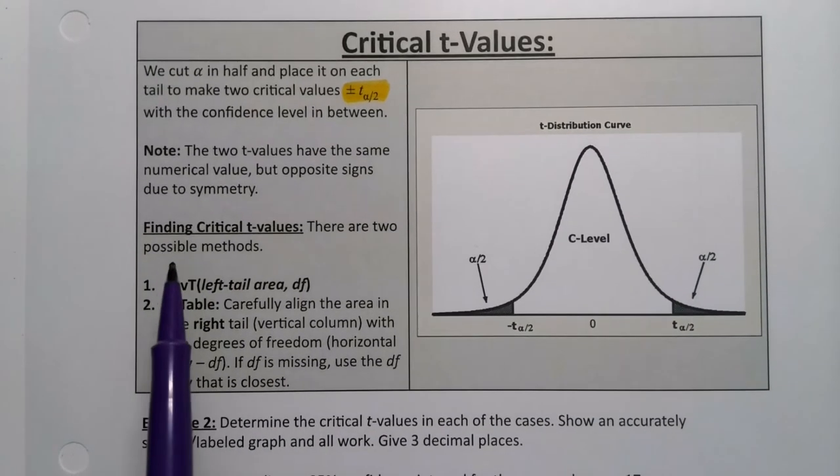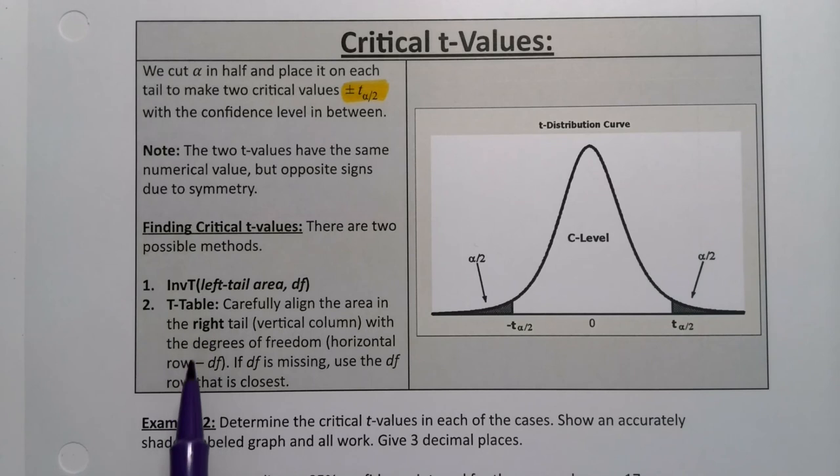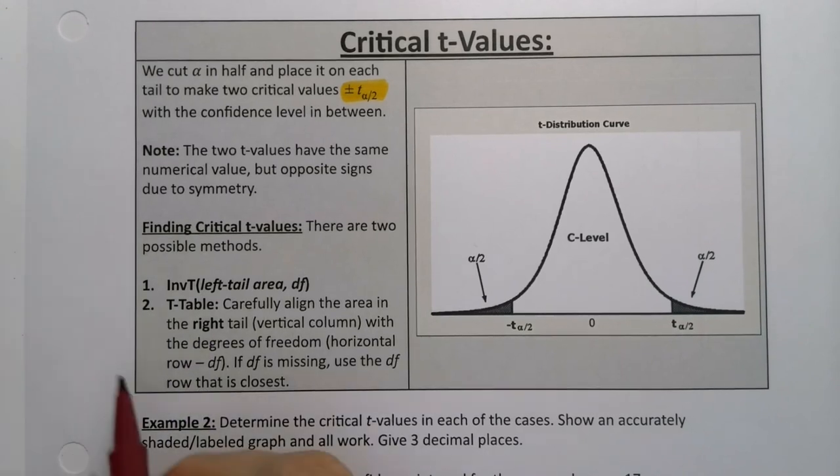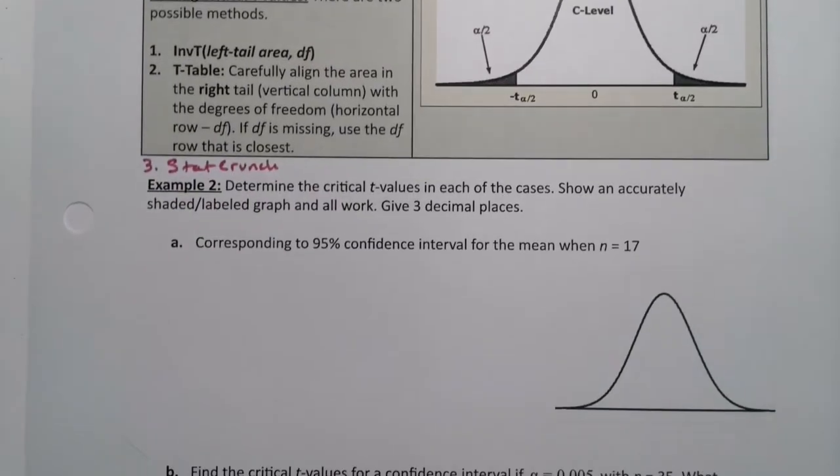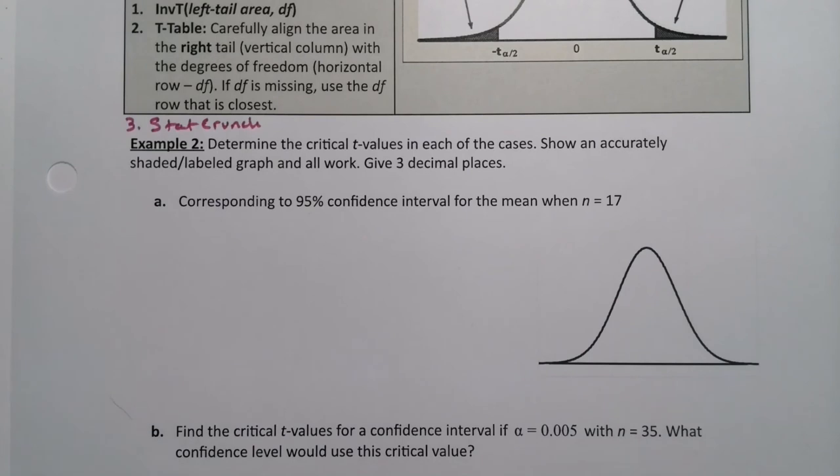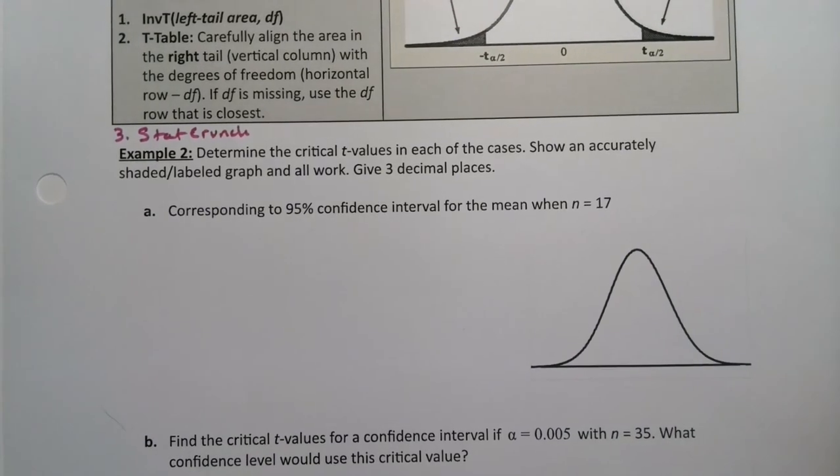And how we're going to find them, well, inverse t and the t-table, and then of course we'll also be able to use StatCrunch as well, and we'll see how to use StatCrunch for it. But other than that, it's very similar to what we did for z alpha over 2. So we're going to determine the critical t-values for these particular problems.